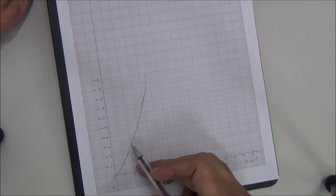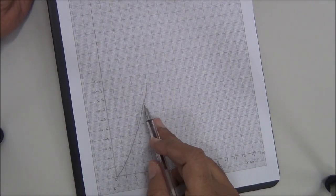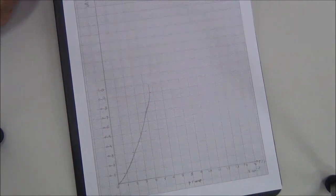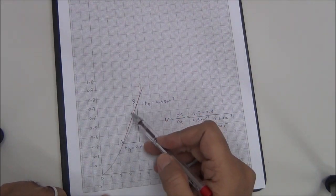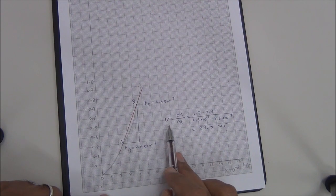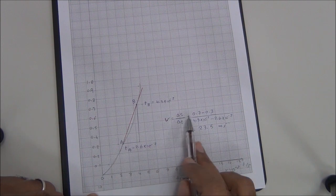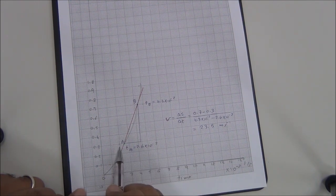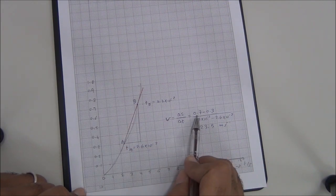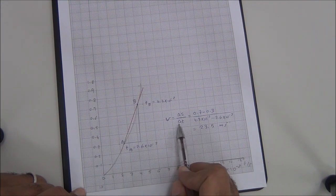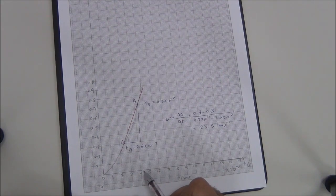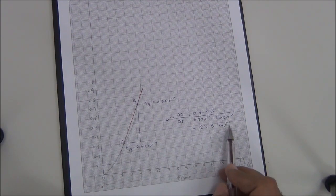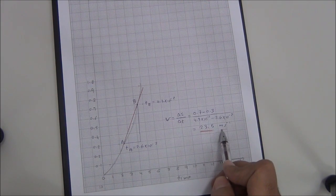We take two points on the graph, A and B, and find the average velocity between them. We draw a line through the two points and construct a triangle. The average velocity is the change in displacement over the change in time. Displacement at B is 0.7 m, displacement at A is 0.3 m. Time at B is 4.3 × 10⁻² s and time at A is 2.6 × 10⁻² s. Calculating this gives an average velocity of 23.5 meters per second.